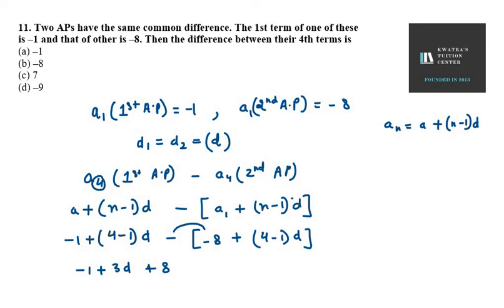So now you can see that minus 3D and positive 3D will get cancelled out. So you are left with 8 minus 7 and it equals 7. That means the right option is C. So that's your solution for question number 11.